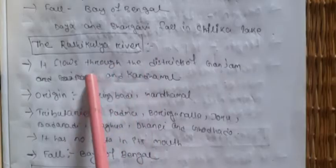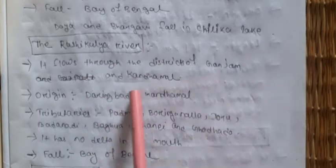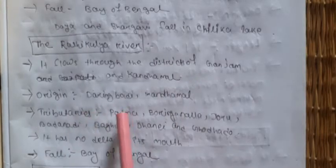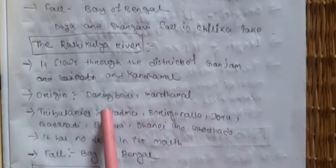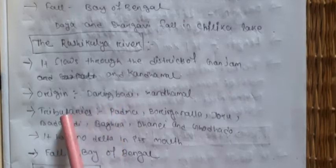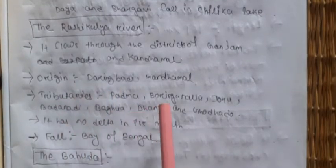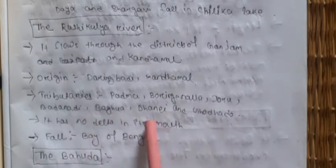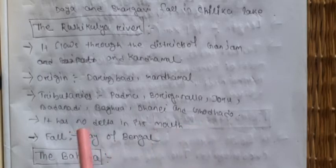Rusikulya river flows through the districts of Ganjam and Kandhamal. Its origin is at Daringibadi, Kandhamada — also known as the Kashmir of Odisha. Its tributaries include Padma, Boring, Nalo, Jodu, Bodo, Nadi, Bagua, Dhanai, and Ghodado. It has no delta at its mouth and falls into the Bay of Bengal.